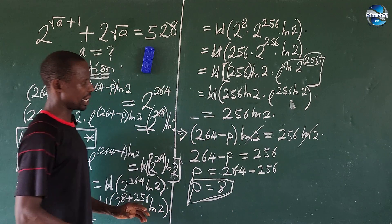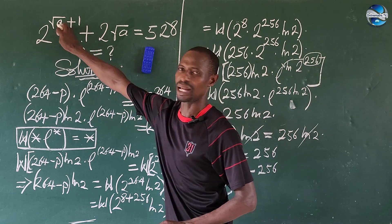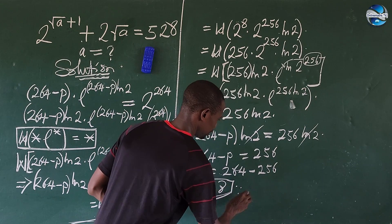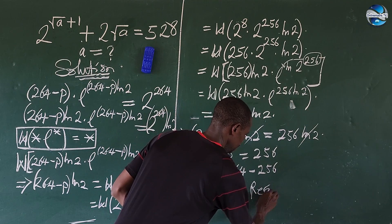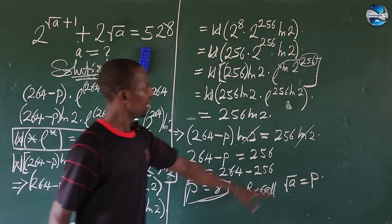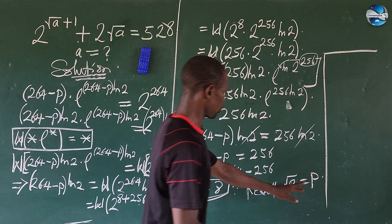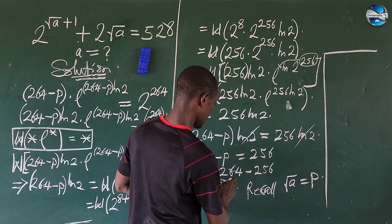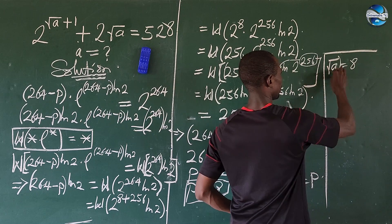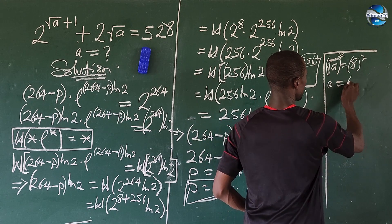We recall that we let p equal the square root of a. So the square root of a equals p equals 8. Taking the square of both sides, this gives us a equal to 64.